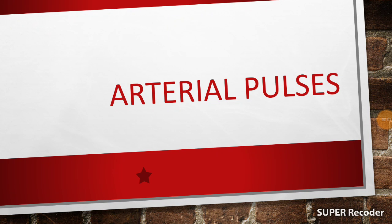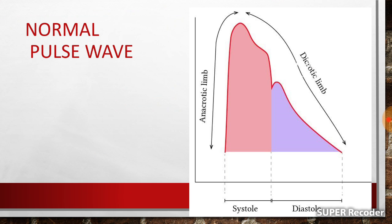In this video, we are going to talk about variations in the arterial pulse. Before we go to the variations, let us focus first on a normal pulse wave. What is a pulse? Whenever there is a cardiac systole, there is a gush of blood into the aorta and the peripheral blood vessels. This is basically felt as a lateral pressure whenever we feel a pulse. If we graph this pulse variation, we get a wave which we call the pulse wave.